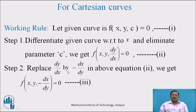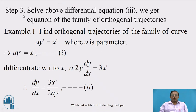In step 2, replace dy/dx by −dx/dy in equation 2. We get f(x, y, −dx/dy) = 0, denoted as equation 3. This differential equation is for orthogonal trajectories. In step 3, solve the differential equation 3 obtained in step 2. We get a family of curves which is orthogonal to the given family of curves, called orthogonal trajectories.